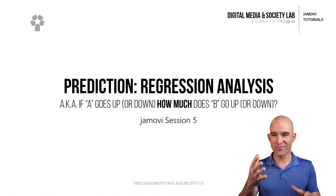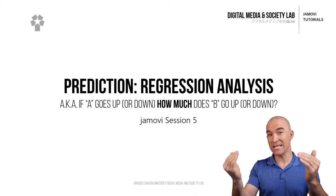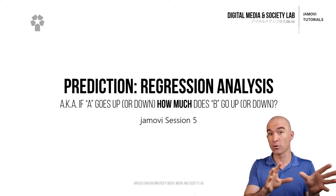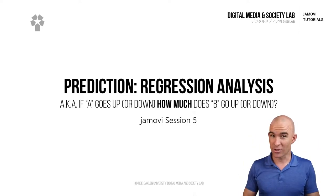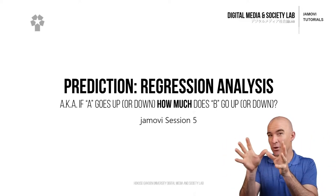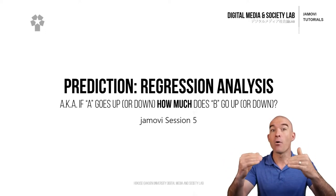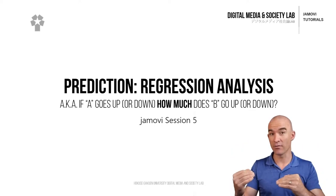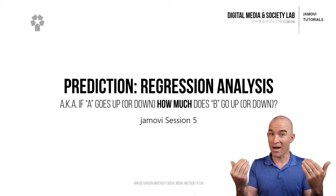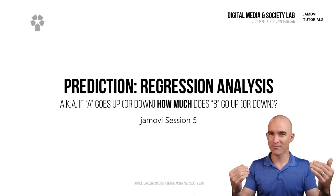So essentially, if A goes up, how much does B go up or down? We have previously looked at correlation, which asks if A goes up, does B go up or down? But regression is all about how much does B change — not just whether A and B are related, but how much does something change based on something else.